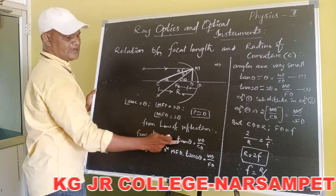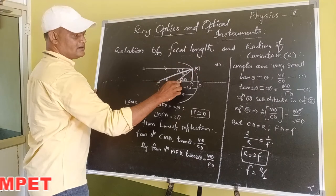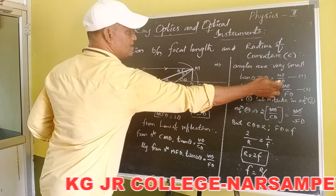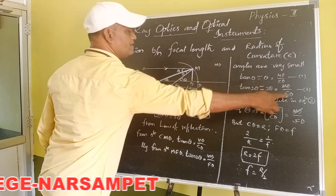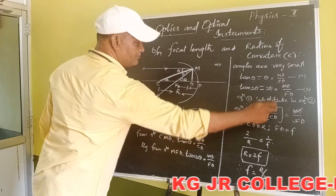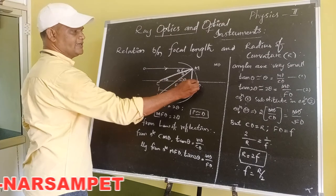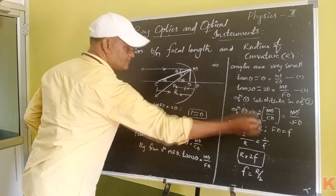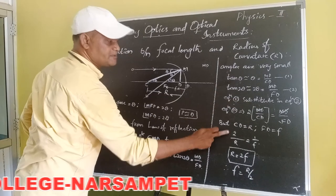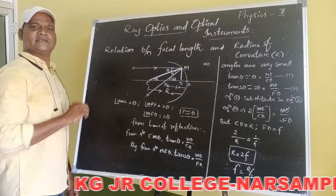From triangle CMD, tan theta equals MD by CD, and from triangle CMD, tan 2 theta equals MD by FD. Since the angles are very small, tan theta equals theta equals MD by CD (equation 1), and tan 2 theta equals 2 theta equals MD by FD (equation 2). Substituting equation 1 into equation 2, we get 2 times (MD by CD) equals MD by FD. The MD terms cancel. CD is the radius of curvature r, and FD is the focal length f. Finally, we get r equals 2f and f equals r by 2. This is the relationship between focal length and radius of curvature.